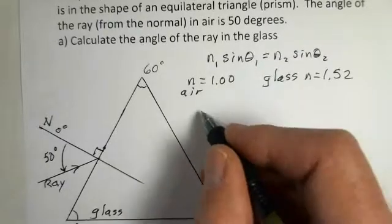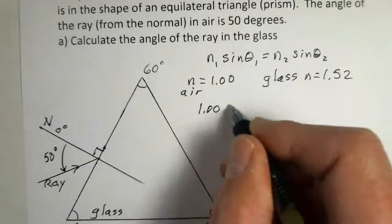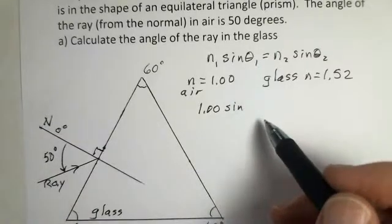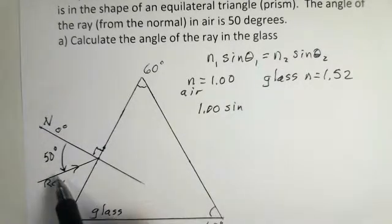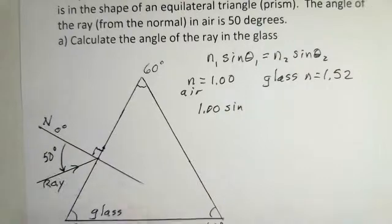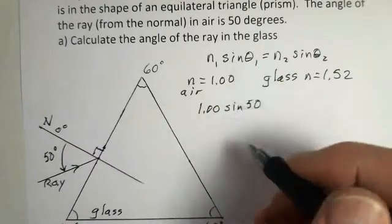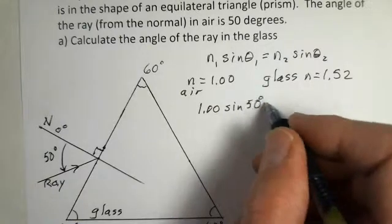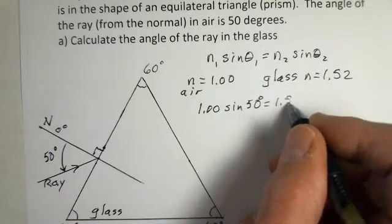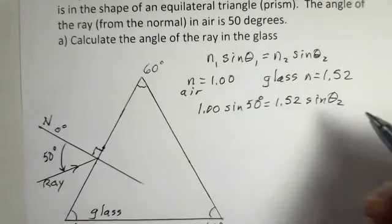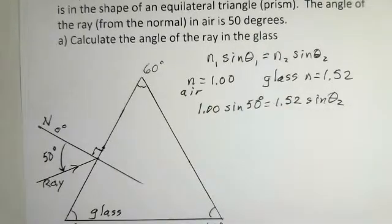So doing the calculation, 1 times sine... well, what number should I put in here? Well, we look at the word problem, we look at our diagram. 50 degrees is the angle. Theta is the angle from the normal to the ray. So 50 degrees. And I have 1.52 and sine of theta 2. We're trying to calculate theta 2. What's the angle inside the glass?